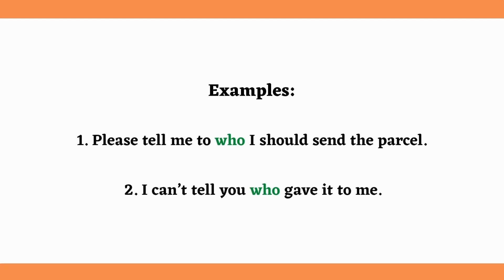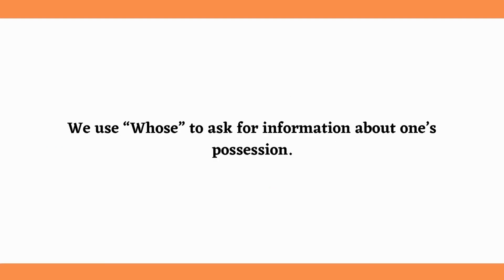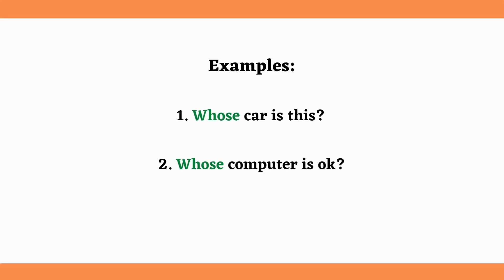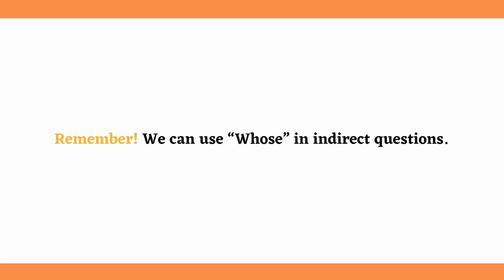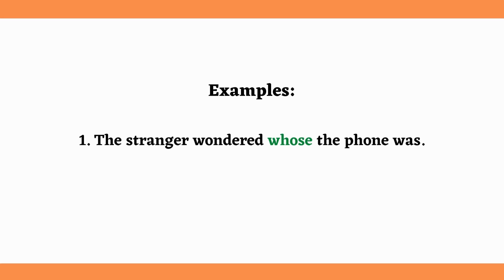The next WH word is 'Whose.' We use 'whose' to ask for information about one's possession. For example: Whose car is this? Whose computer is okay? Whose are these books? Remember, we can use 'whose' in indirect questions. For example: The stranger wondered whose phone it was. He asked me whose flat this is.